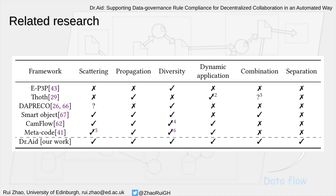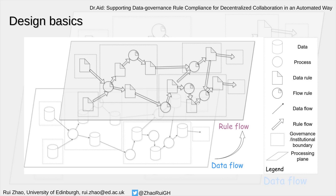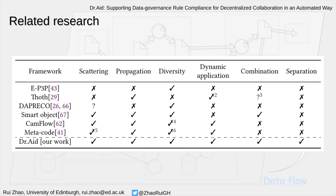That forms the Dr.Aid framework, short for Data Rule Aid. Similar to related research, we also extract information from the data flow and use that to direct how it performs reasoning on the rule flow plane. Different from most related research, our rule language supports obligations instead of simply access controls. It supports multi-input-multi-output processes in multi-stage data flow graphs. It can derive the data use rules for the output data, so the outputs of a workflow can be reused by other people while keeping the compliance check working without intervention.